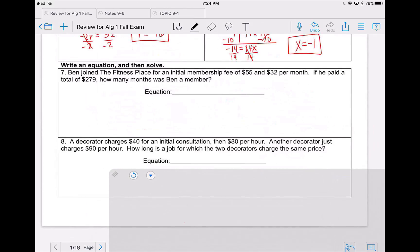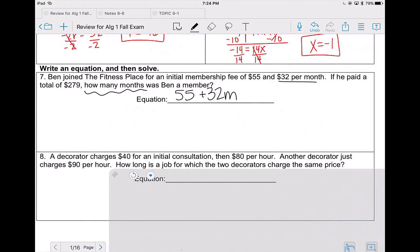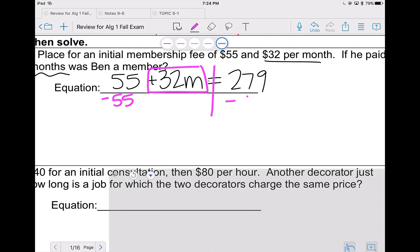Problems 7 and 8 ask us to write an equation and solve. Ben joined the Fitness Palace for an initial membership fee of $55 and $32 per month. If he paid a total of $279, how many months was he a member? So his initial fee, his one-time fee was $55. He then pays $32 per month. Now we don't know how many months, that's what they asked us to find. So our variable is going to be M for months. This is going to equal the total money that he spent, which is $297. In order to solve, we move the $55 because it's next to M but not directly attached. So $32M equals $297 minus $55, which is $224. We then divide both sides by $32, and we get 7 months.